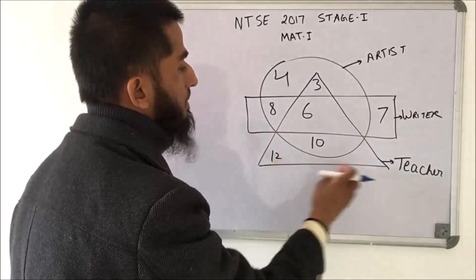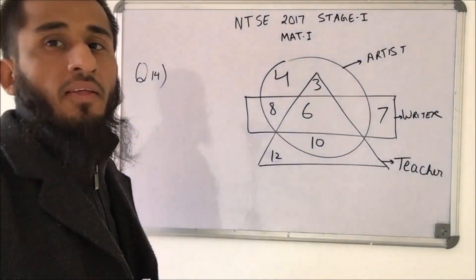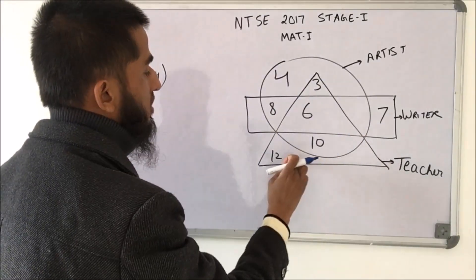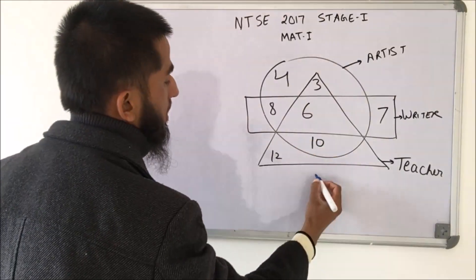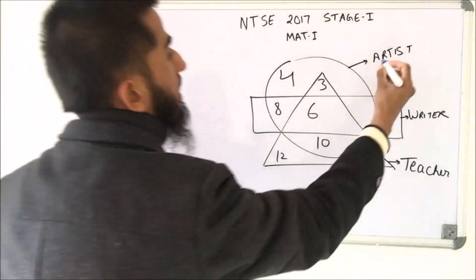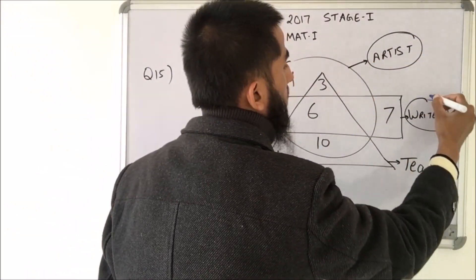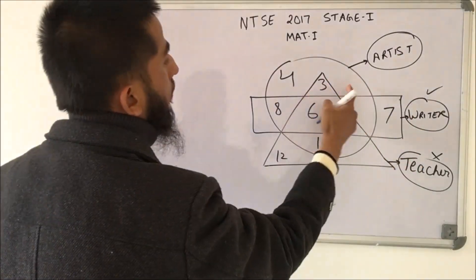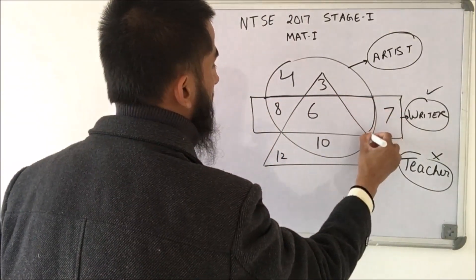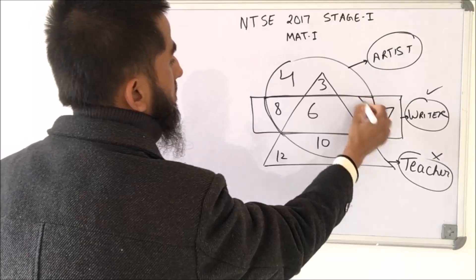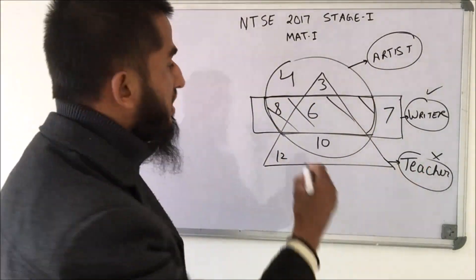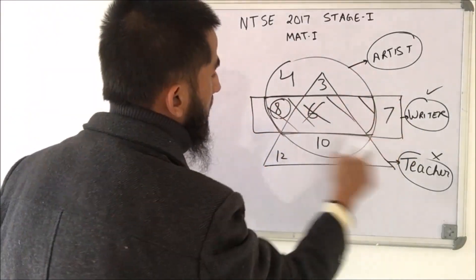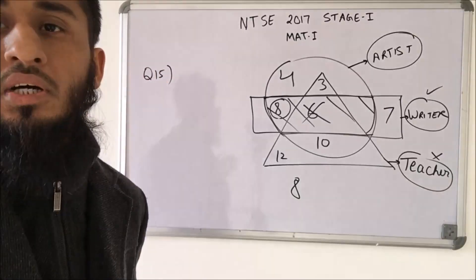In this Venn diagram, the triangle represents teachers, the rectangle represents writers, and the circle represents artists with overlapping parts. Total teachers = all numbers within the triangle: 10 + 12 + 6 + 3 = 31. For artists who are also writers but not teachers: we need the intersection of circle and rectangle. That gives us 8 and 6, but we remove the number inside the triangle, leaving only 8. So 8 are the artists who are writers but not teachers.